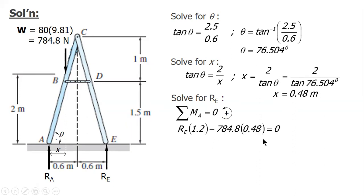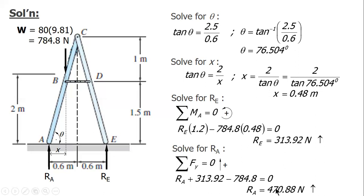And then solve, you have RE equal to 313.92, since positive therefore upward. Then you solve for RA, sum up force along the vertical, and you have RE equals 470.88 newtons upward also.